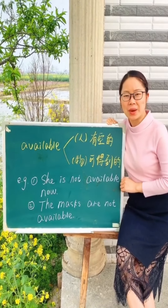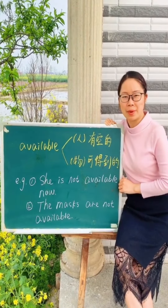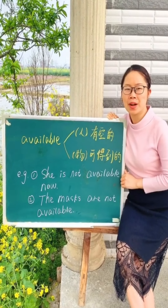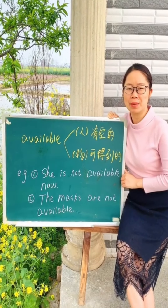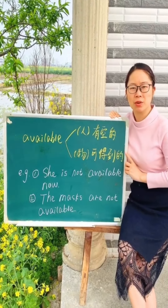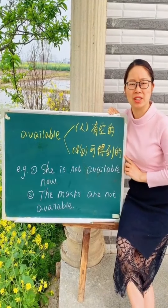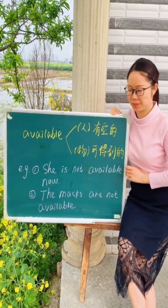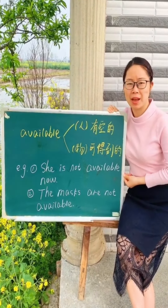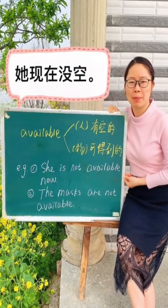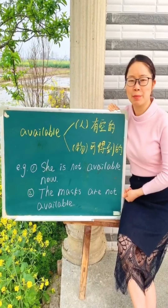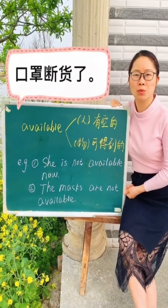高频词汇：available。形容人表示有空的，形容物表示可得到的。例如：She is not available now，她现在没空。The masks are not available，口罩断货了。